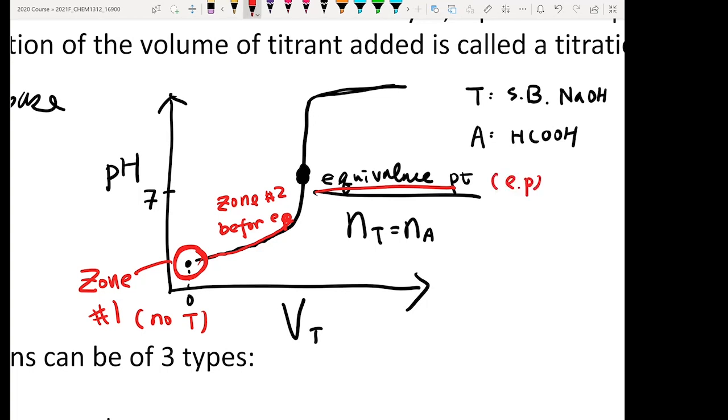Zone two is actually before your equivalence point. Zone three will be actually at equivalence point. And then zone four will be after equivalence point.